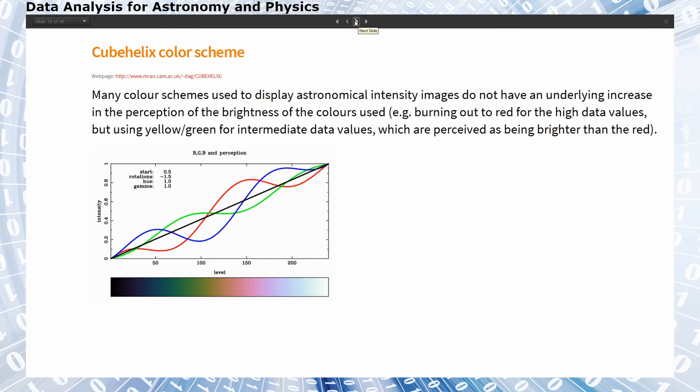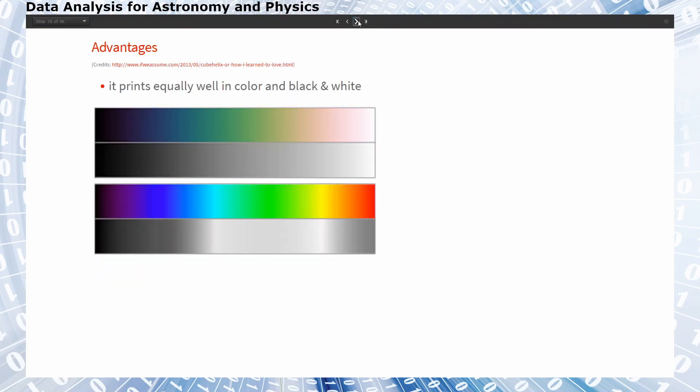It is designed to have an even distribution of brightnesses going from the low number to the high numbers so that no particular interval across our color bar is perceived as brighter than the other. This can be seen if we convert these color scales to black and white.